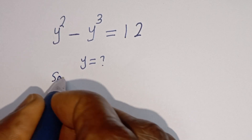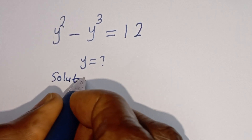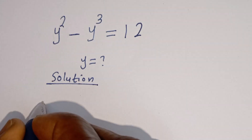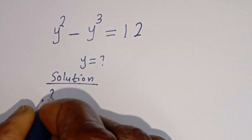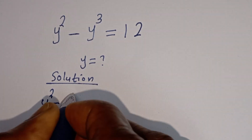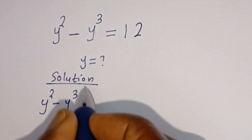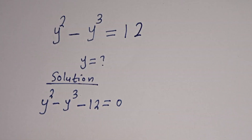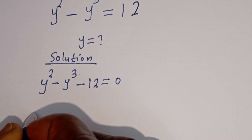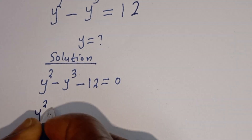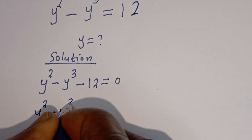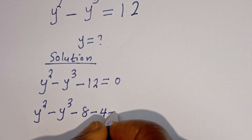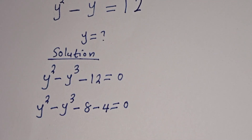Solution. We have y squared minus y to the power of 3. Let's bring the 12 to this side, so minus 12 is equal to 0. This can be written as y squared minus y to the power of 3 minus 12, and minus 12 can be written as minus 8 minus 4, is equal to 0.